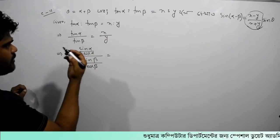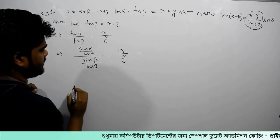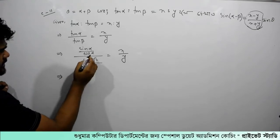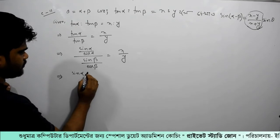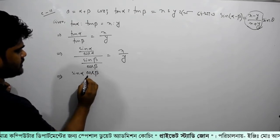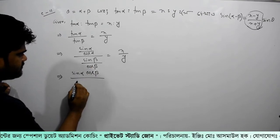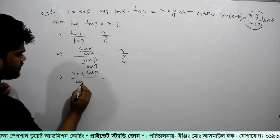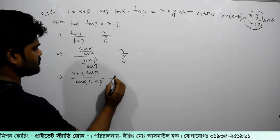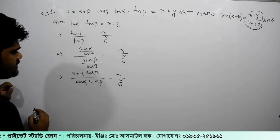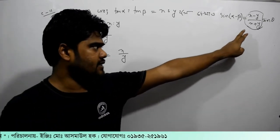This is the same thing, so I am going to add x by y. Sin alpha, cos beta divided by sin or cos alpha, sin beta is equal to x by y. Now, what do you see? This x by y is the target of the theta.